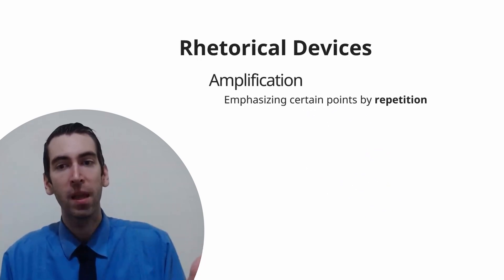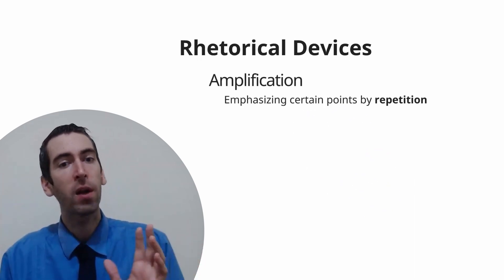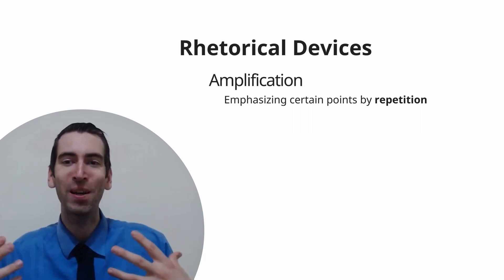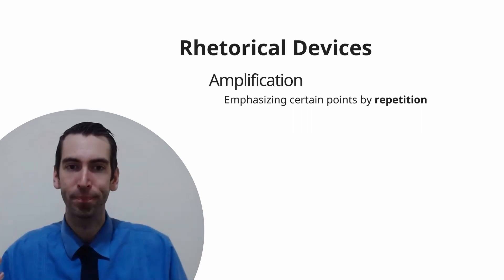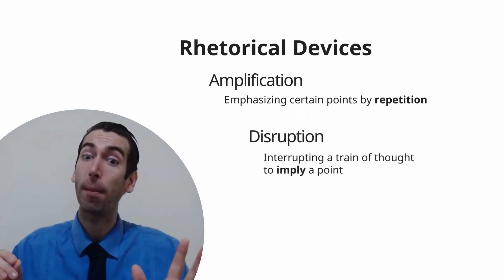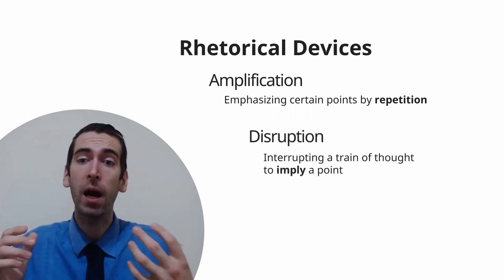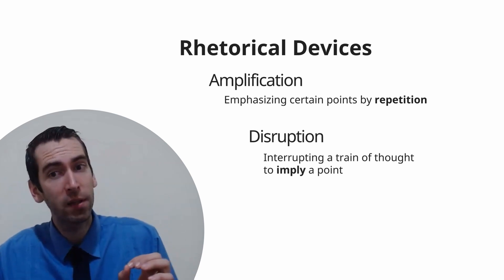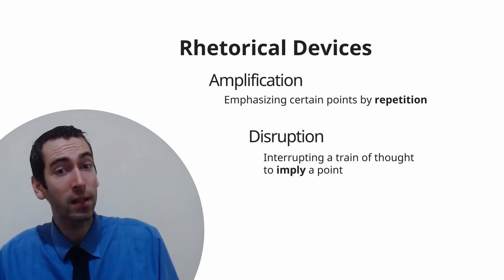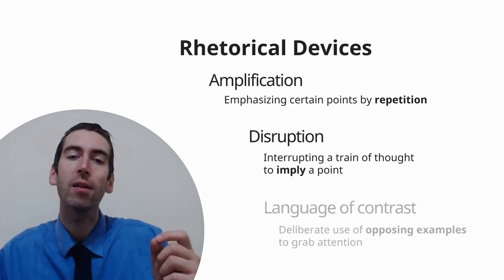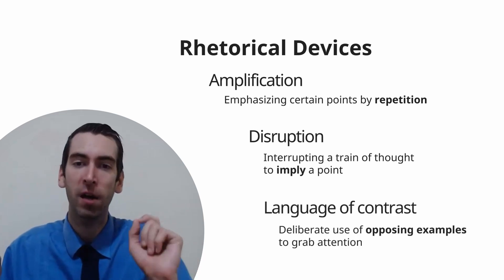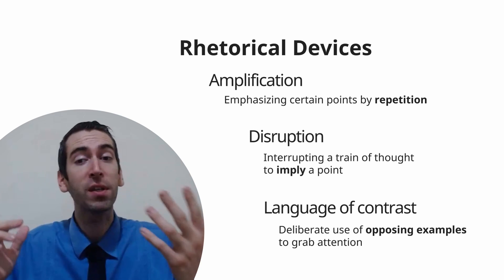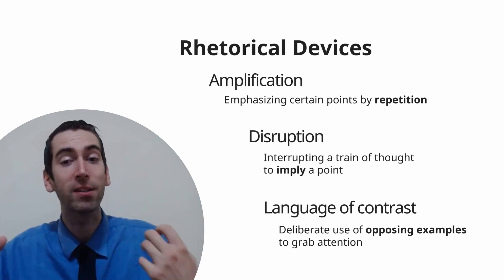Firstly, amplification — this is where an author might repeat him or herself to indicate a point is worth listening to. How about disruption? This is where an author will interrupt a train of thought in order to imply a point rather than just state it directly. How about language of contrast? This is where an author will deliberately use opposing examples to grab a reader's attention.